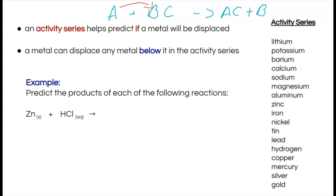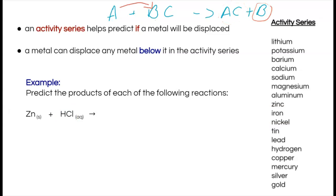In this first example, we see an element zinc and a compound hydrogen chloride (hydrochloric acid). We can tell this is a single displacement reaction because we have that element-and-compound combination. Since we're going to be making a compound and an element, we'll need to use our crossover rule.